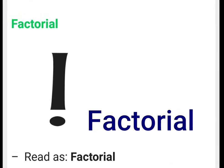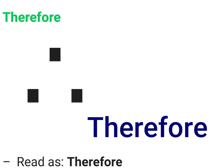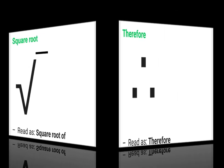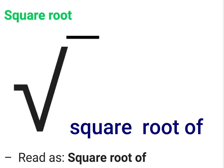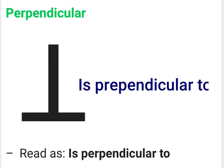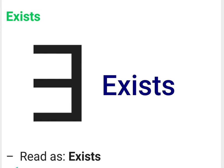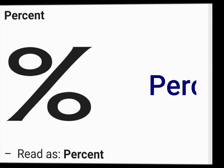Union of Two Sets. Factorial. Therefore. Square Root Of. Is Perpendicular To. Exists. Percent.